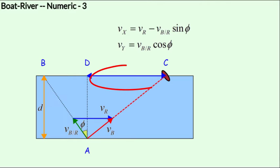For the drift, we consider only the x direction. So it would be the velocity vx times the time that the boat traveled.